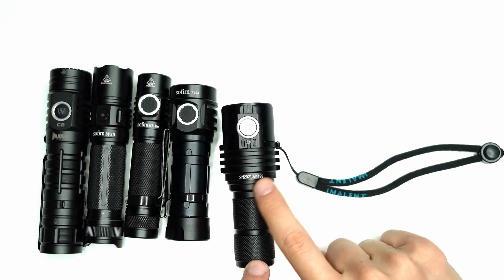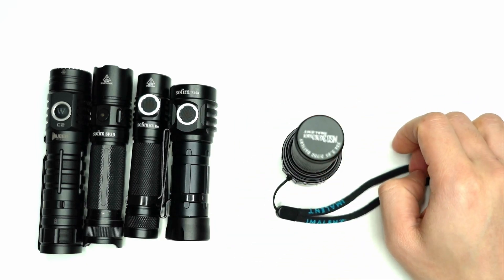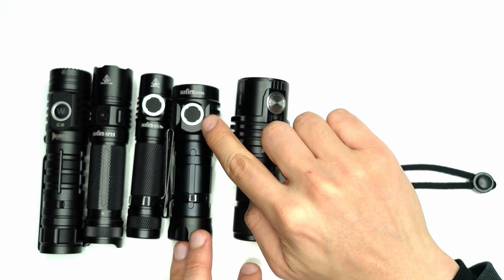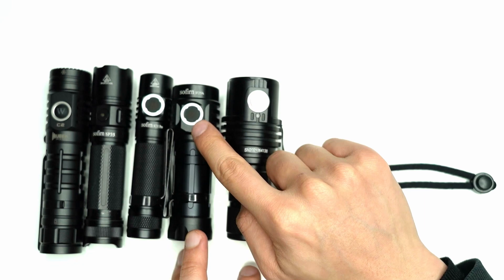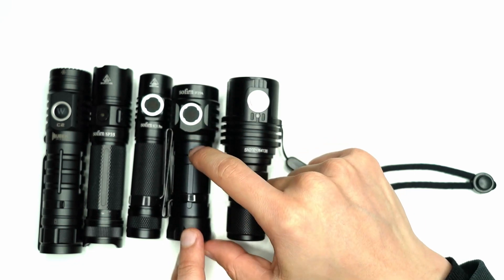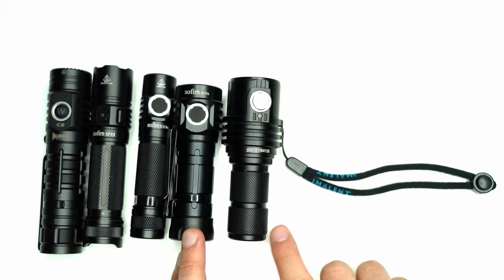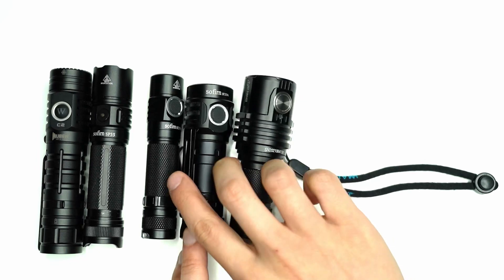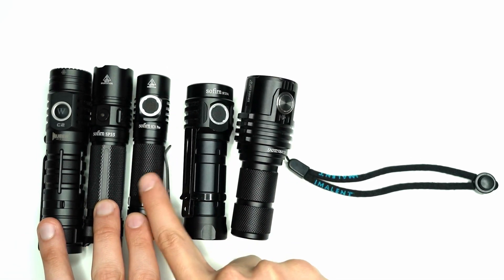Over here we've got the Sofirn IF25A that is 3,800 lumens, but with the Samsung 40T apparently gets to over 4,000 lumens. And of course you've got the Imalent MS18 that's 13,000.